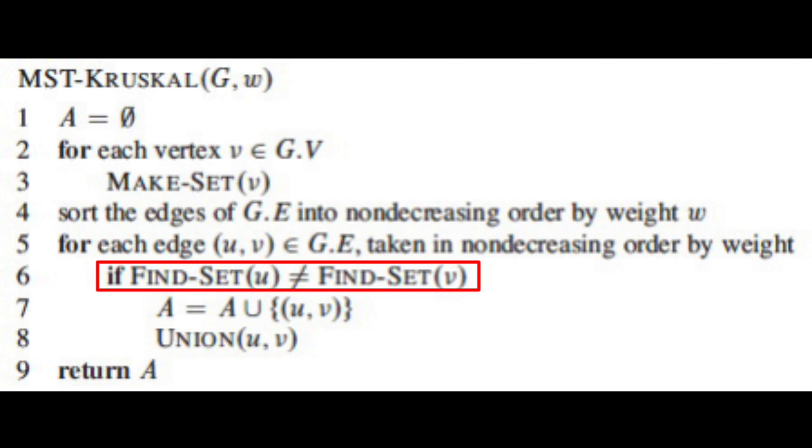The if statement here checks whether u and v belong to different trees, and if they belong to different trees, line 7 adds the edge u v to the set A, that is, the edge u v is added to the minimum cost spanning tree.